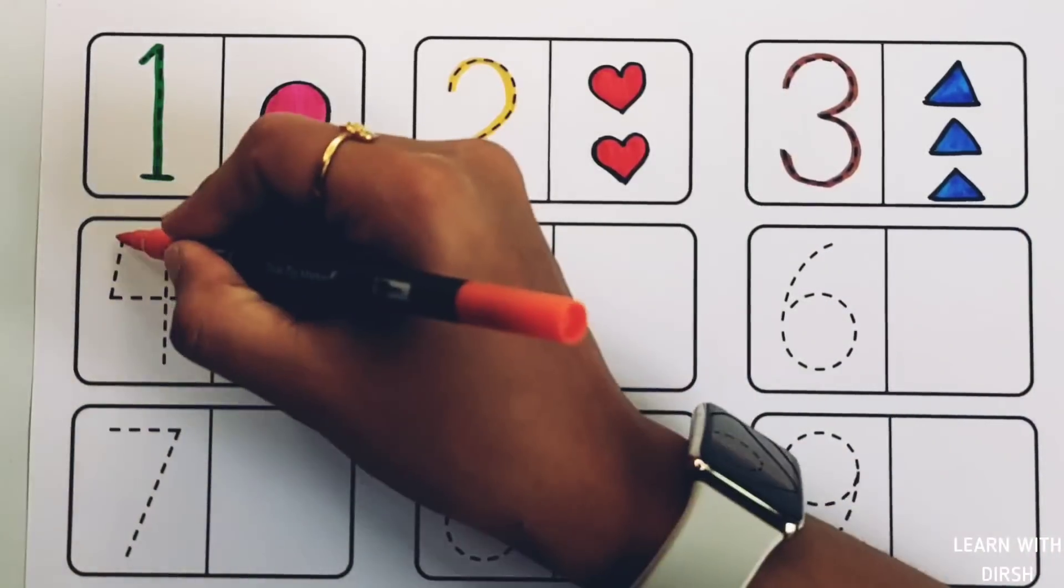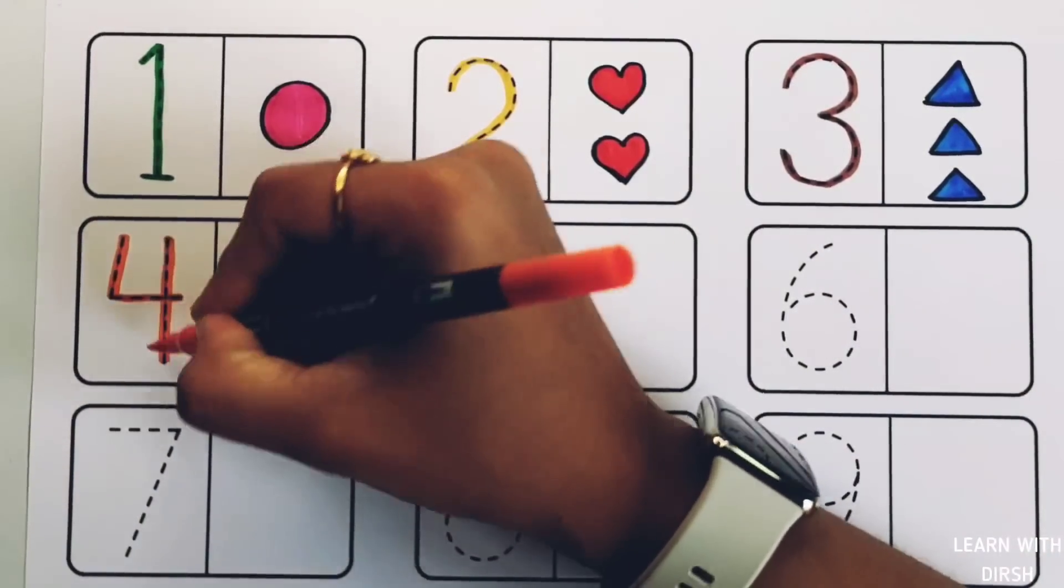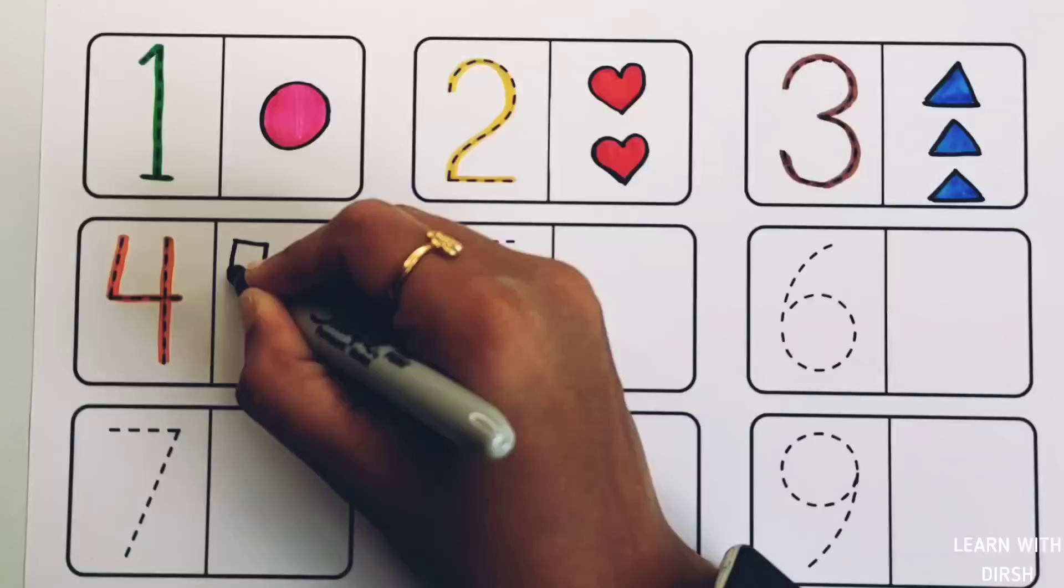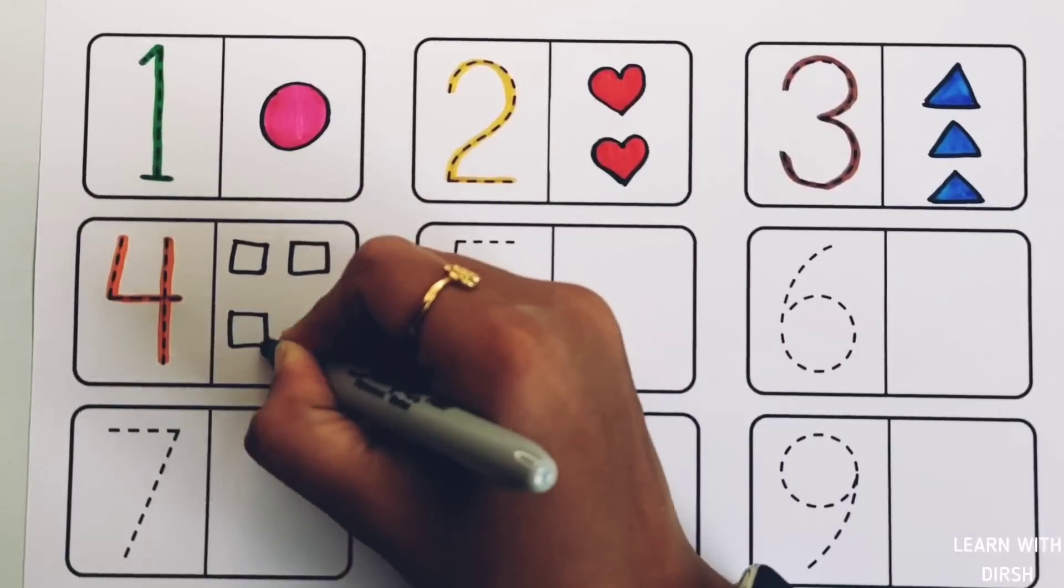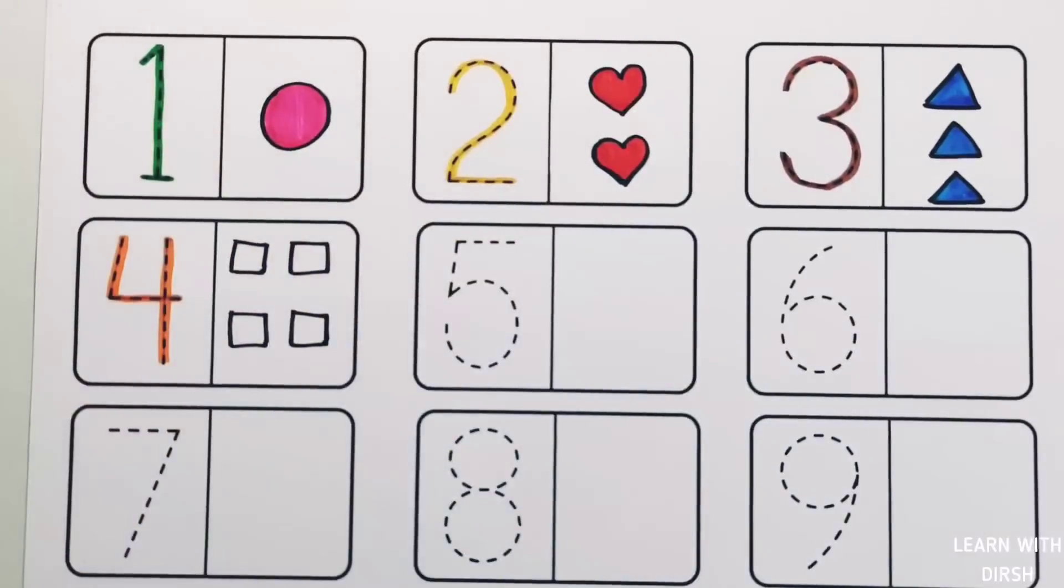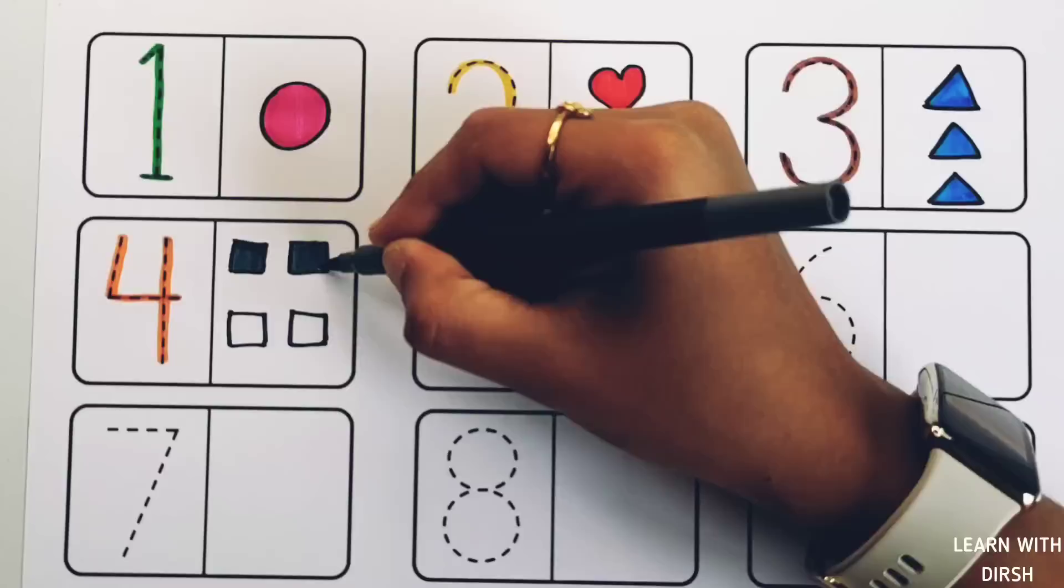Three triangles. Number four: four squares, gray color.